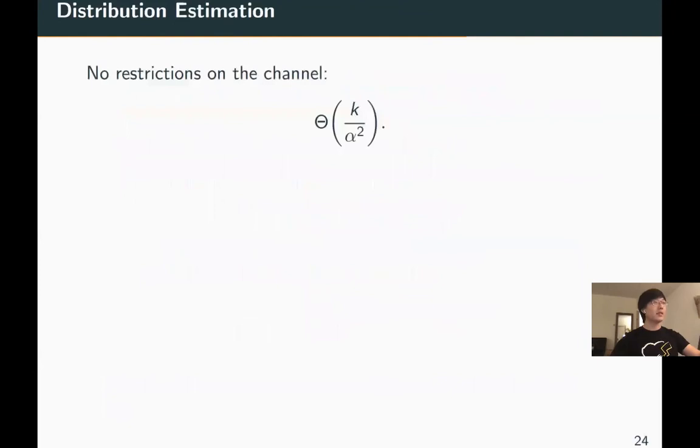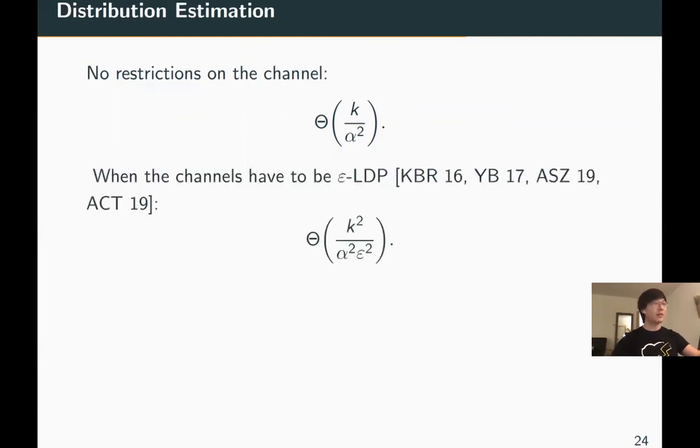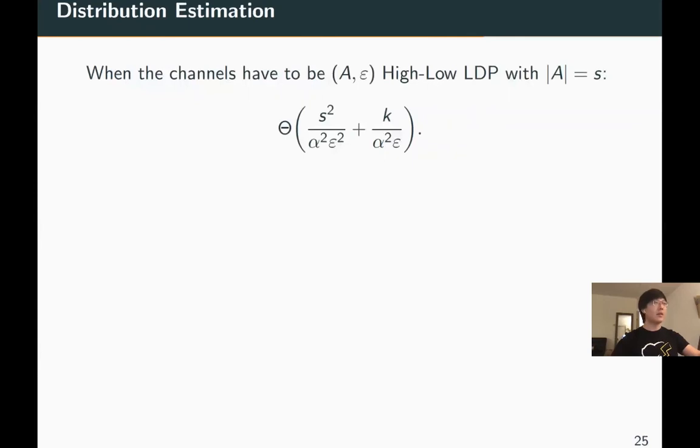Without any constraints, the sample complexity is known to be k over alpha squared, which is linear in the alphabet size. With classic LDP constraints, the sample complexity is known to be k over alpha squared epsilon squared, which is quadratic in the alphabet size. When the channels are high-low LDP with a sensitive set of size S, we establish the sample complexity as the following. The sample complexity is only quadratic in the sensitive set size. We can see that when S is smaller than square root k, the sample complexity is still linear in k.